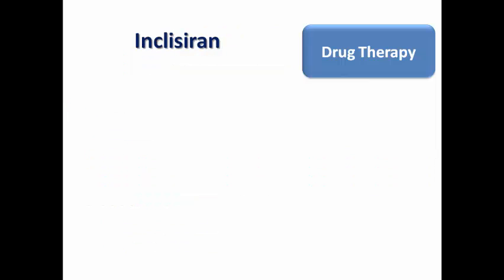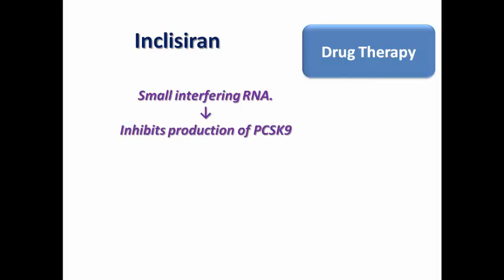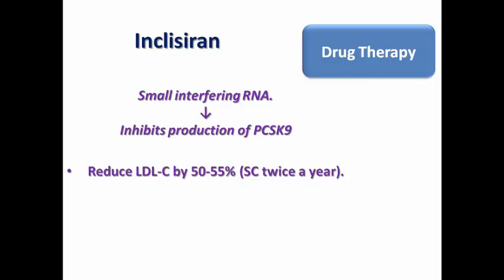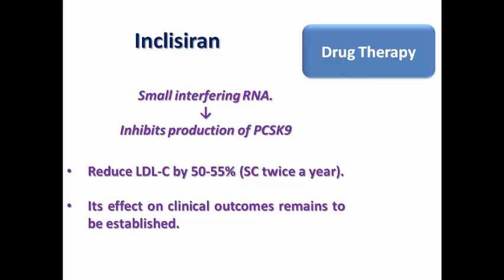Inclisiran is also a parenteral medication recently approved for treatment of dyslipidemia. It is a small interfering RNA that inhibits the production of PCSK9, reducing LDL by 50-55%, and is taken subcutaneously only twice per year. However, its effect on clinical outcomes remains to be established, as it needs more outcome trials to prove efficacy in reducing morbidity and mortality in patients with established cardiovascular disease.